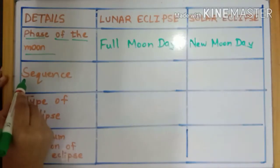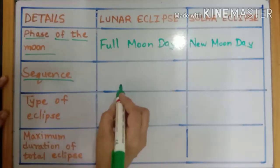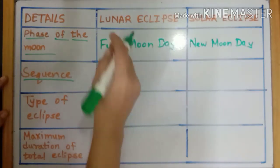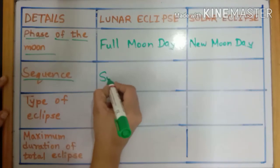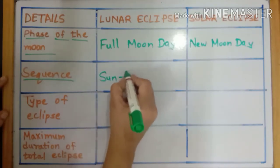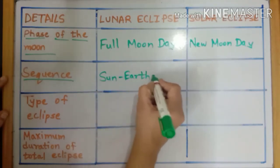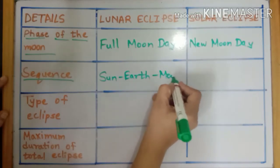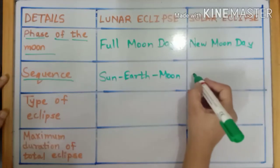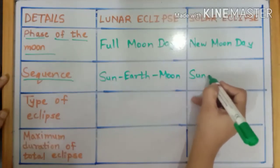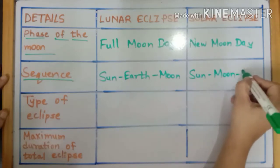The next characteristic is the sequence of these celestial bodies. These three bodies come in a specific sequence. For a lunar eclipse, the sequence is sun, earth, and moon, whereas for a solar eclipse, it is sun, moon, and earth.